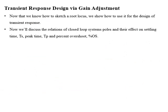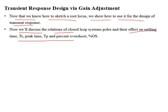We will now study transient response design with the help of gain adjustment. As we change gain K, the location of closed loop system poles also changes, and this location of poles defines the transient specifications like settling time, peak time, and percent overshoot. We will discuss the relation of closed loop system poles and their direct effect on these transient specifications.